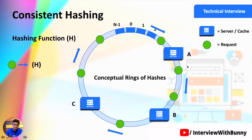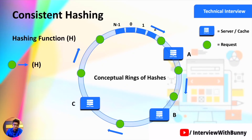All requests that lie on a given region of the ring are served by the nearest server in that region. In terms of caching, all requests in a region are stored in the corresponding cache server — for example, requests in one region are stored in cache server B, and data in another region are stored in cache server C.